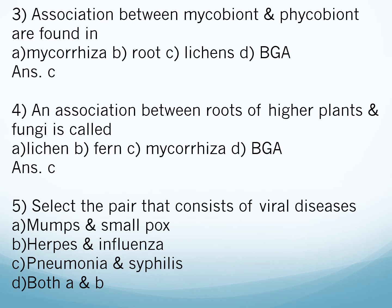Question five: Select the pair that consists of viral diseases. A) mumps and smallpox, B) herpes and influenza, C) pneumonia and syphilis, D) both A and B. The answer is option D — both A and B.